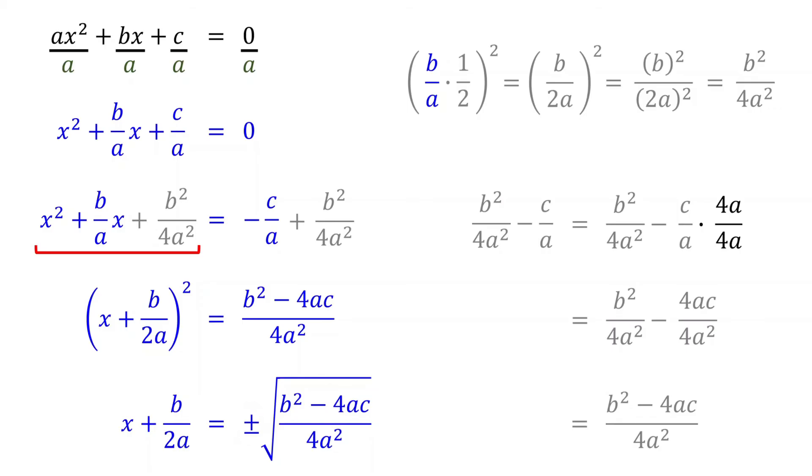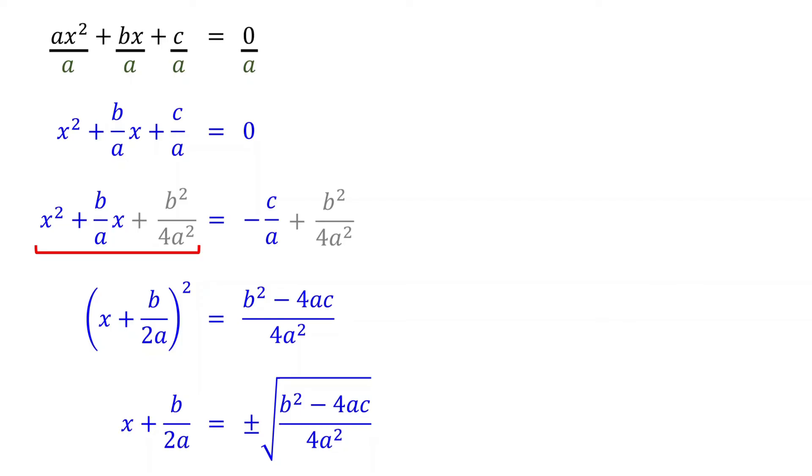We can simplify the right side of the equation. In the denominator, the square root of 4a squared is 2a.